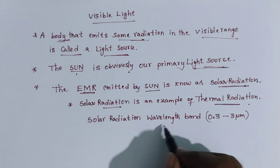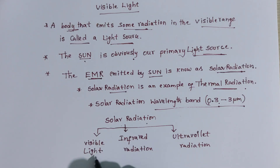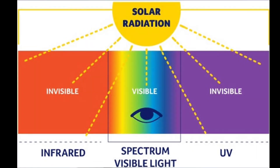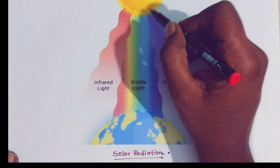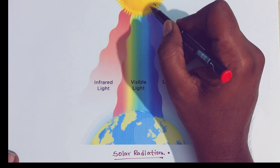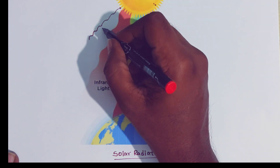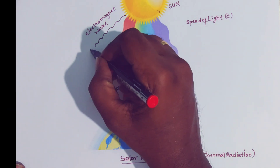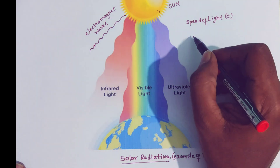Solar radiation has a wavelength band of 0.3 to 3 micrometers and consists of visible light, infrared radiation, and ultraviolet radiation — with about half of solar radiation being visible light. Solar radiation is an example of thermal radiation because the sun emits thermal energy in the form of electromagnetic waves. These waves travel at the speed of light, reaching the Earth's surface in the form of electromagnetic waves, and can also travel through a vacuum.